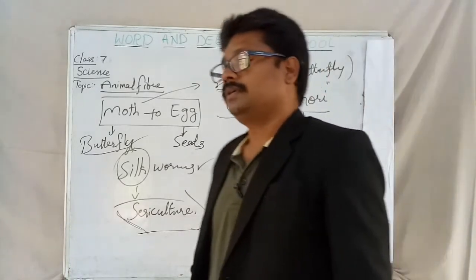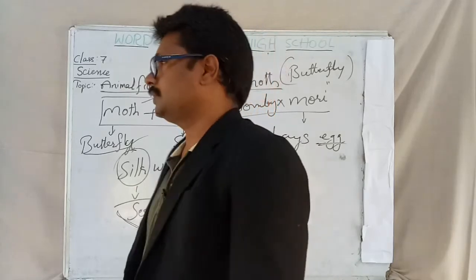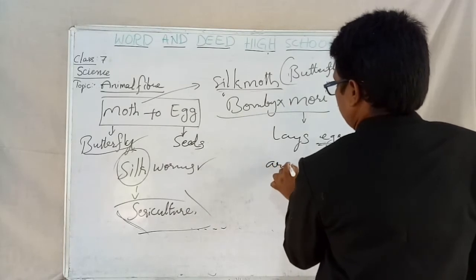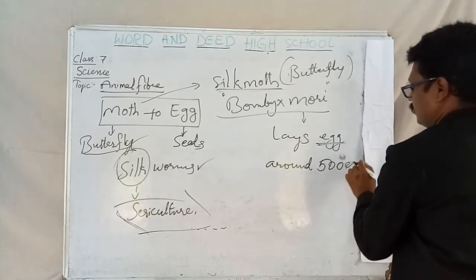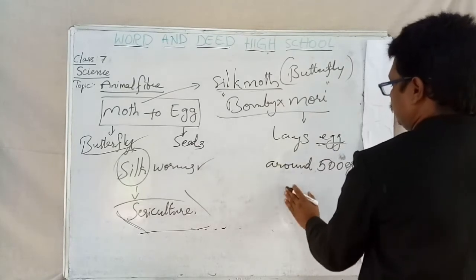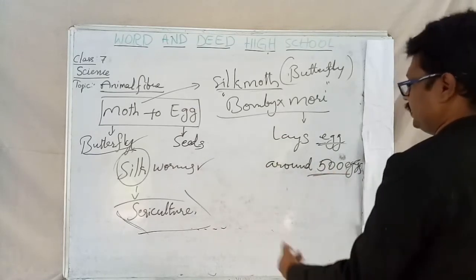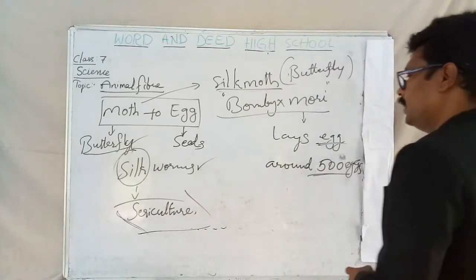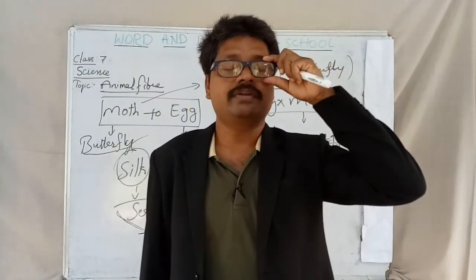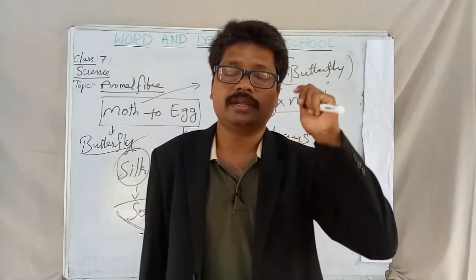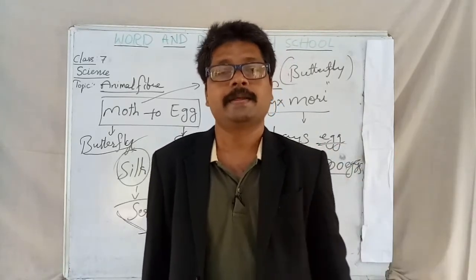Do you know, in its life cycle, a Bombyx mori lays around 500 eggs, and after laying 500 eggs it dies. There are different places in our state where we practice sericulture, and we purchase Bombyx mori or silk moths from different areas of the state.